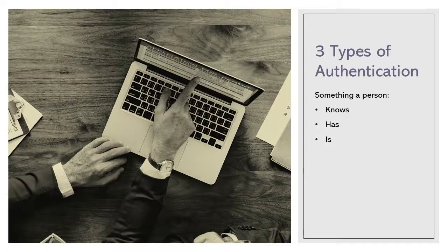What are the three types of authentication? There are three types of authentication. These include something a person knows, something a person has, and something a person is.